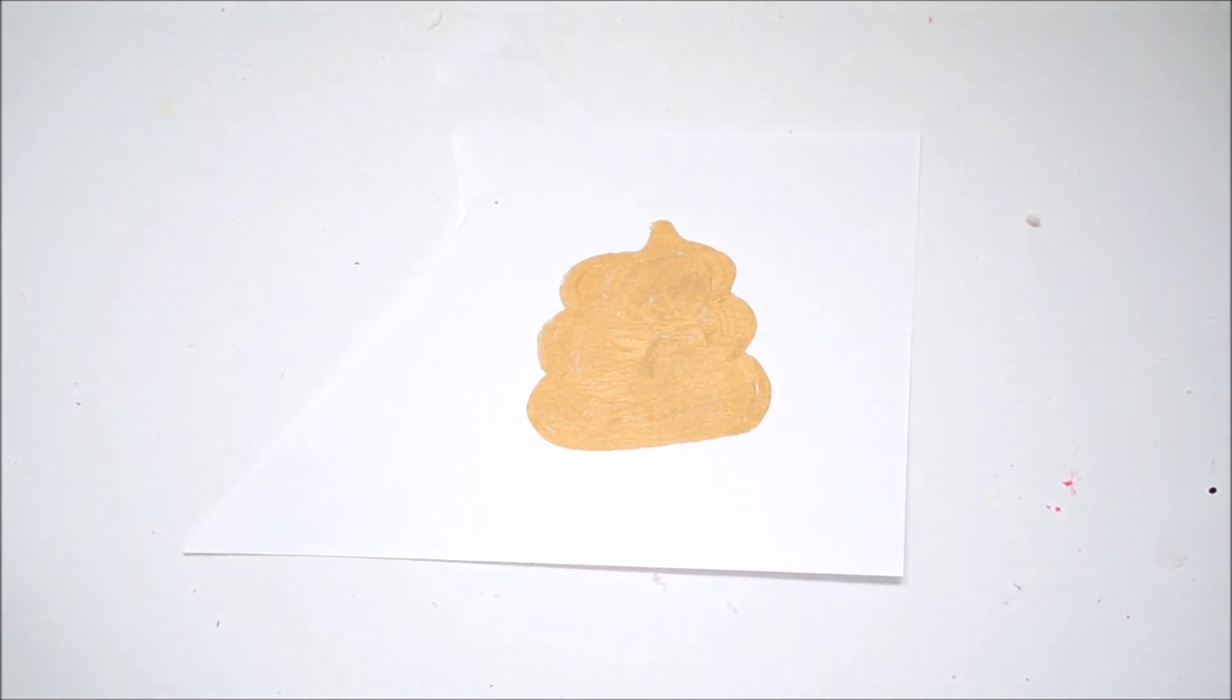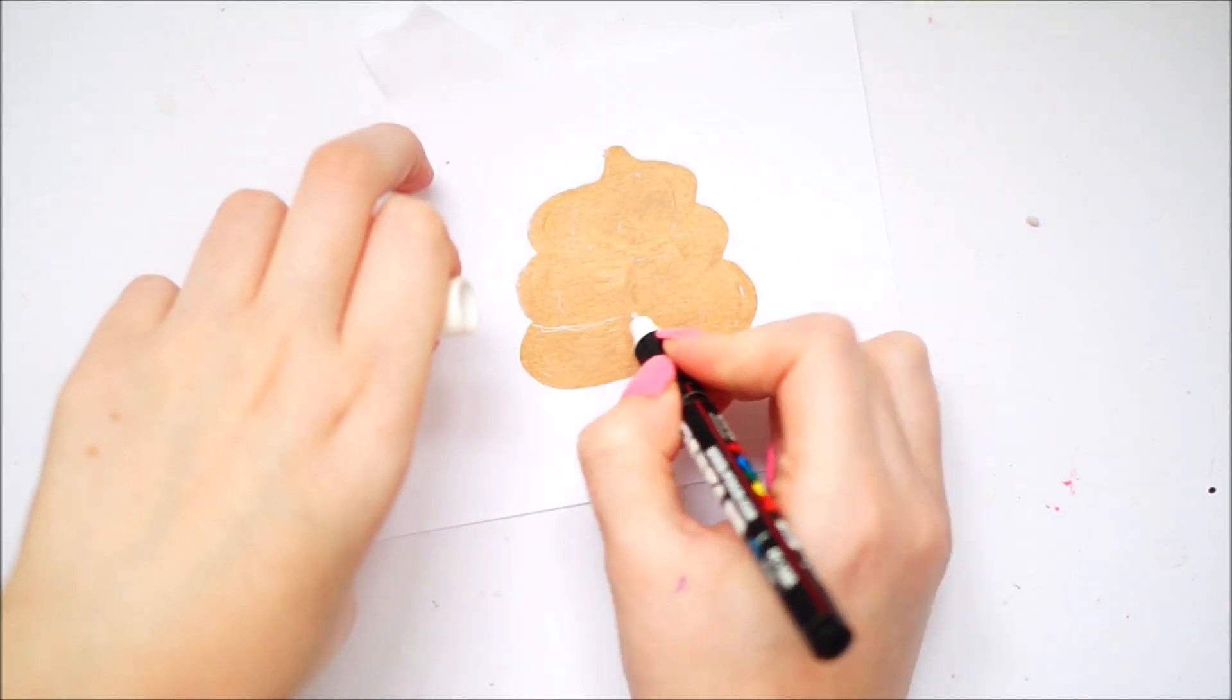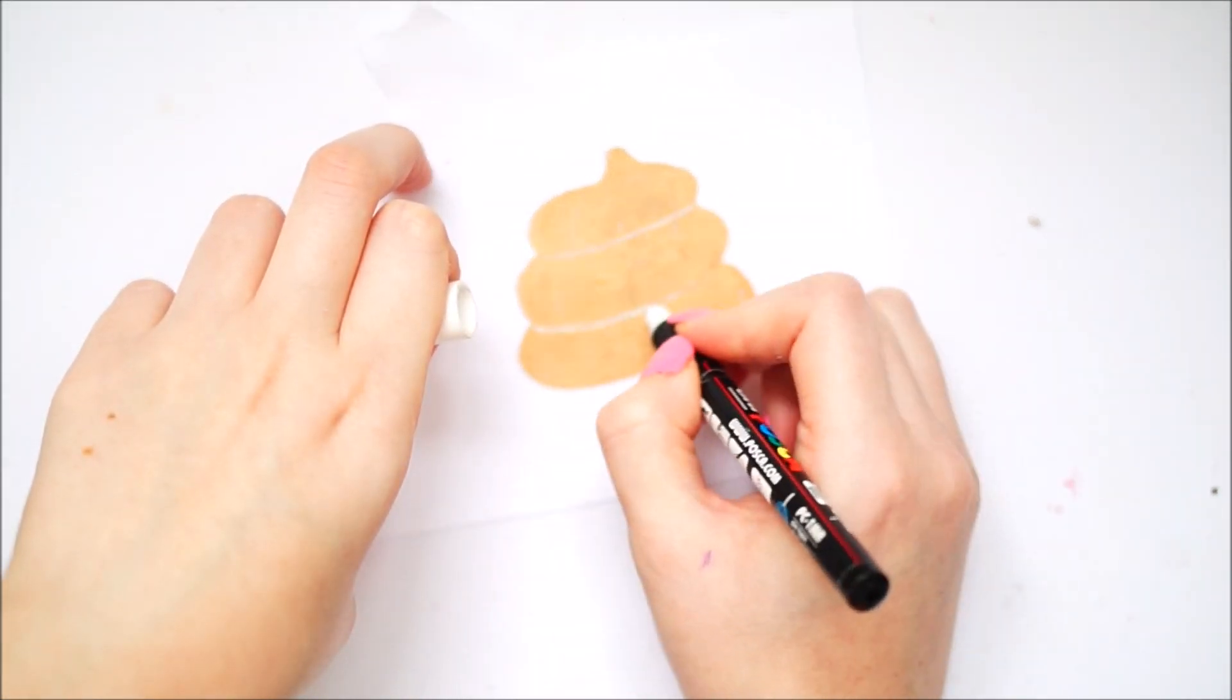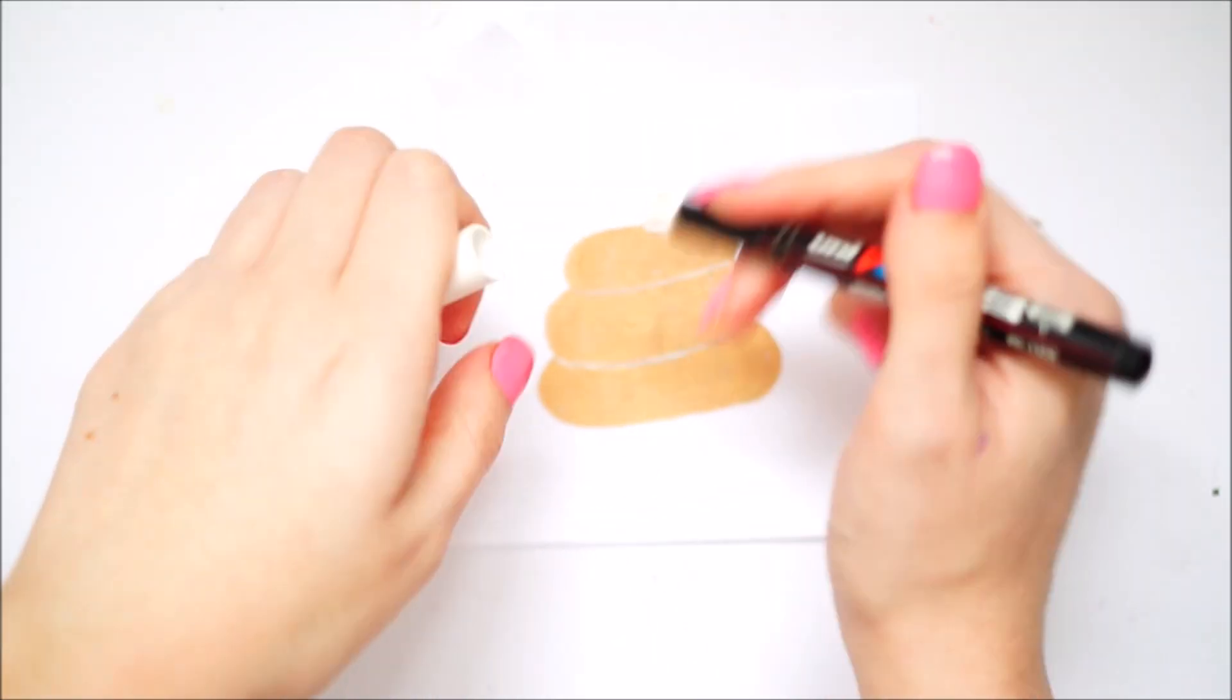I then took a white Posca pen on top of this gold color and just drew out some details to make it look like it was swirling around.